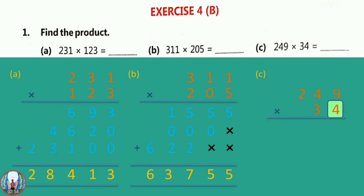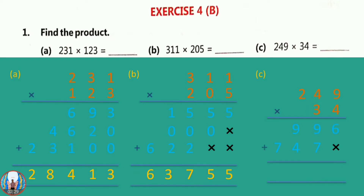Question number C: 249 into 34. First of all we will multiply 4 into 249, that is 996. Now we will multiply 3 into 249, that is 747. Now we will add — the answer is 8,466.